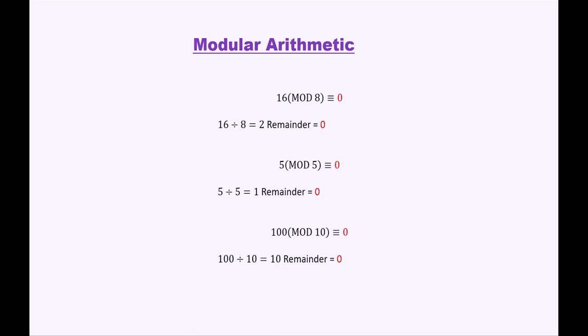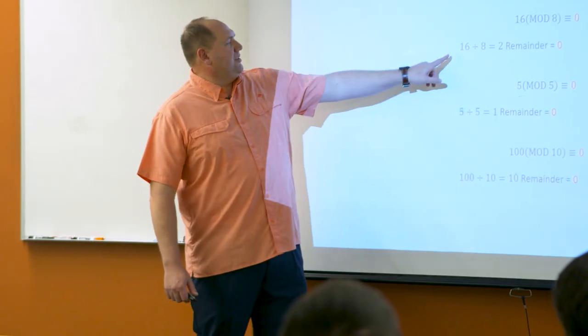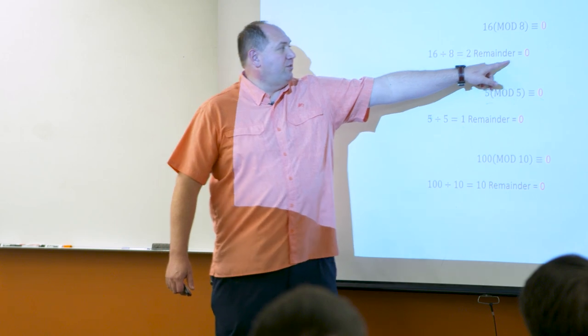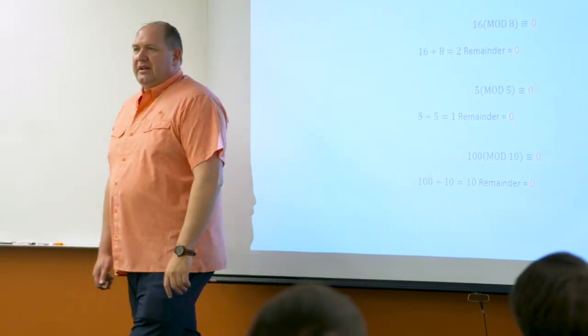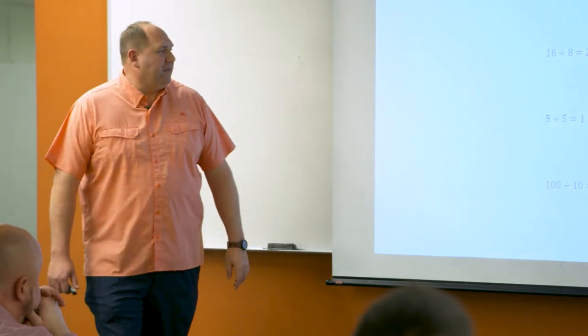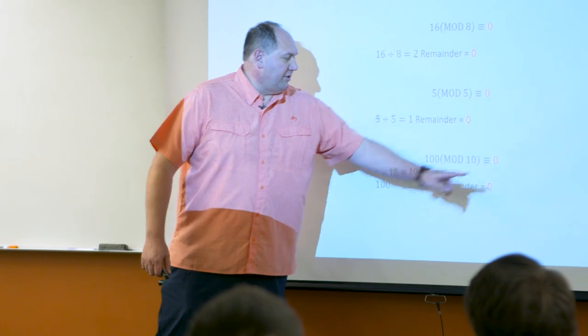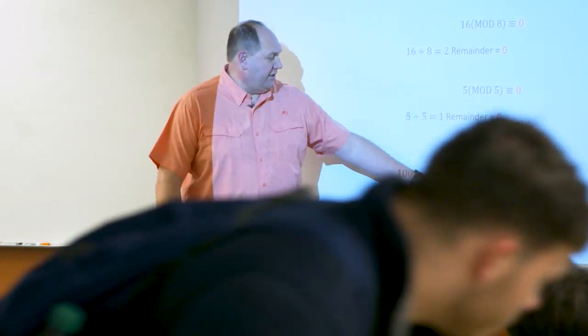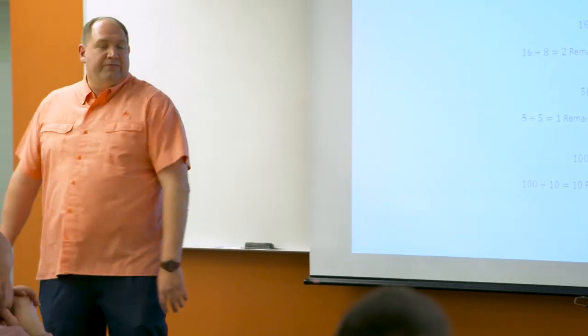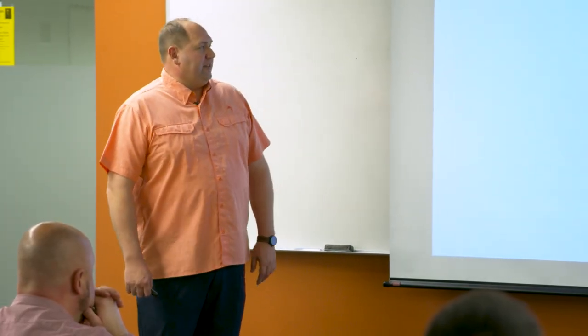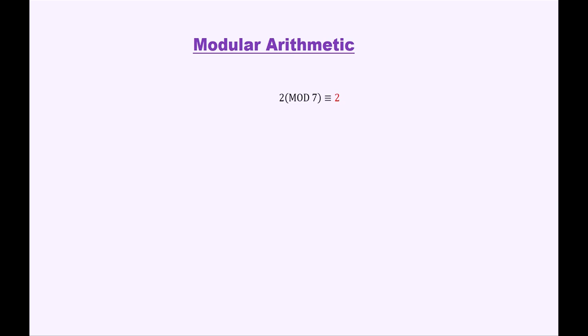Let's look at a couple of special cases. 16 mod 8 is congruent to 0 — 16 divided by 8 equals 2 with no remainder. 5 mod 5: 5 divided by 5 is 1 with no remainder, so that's congruent to 0. And 100 mod 10 is congruent to 0, because 100 divided by 10 equals 10 with no remainder. Those ones are pretty easy. What about 2 mod 7? Well, 2 mod 7 is equal to 2. This is kind of the hardest one, but it's not really hard.